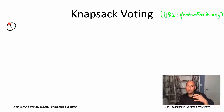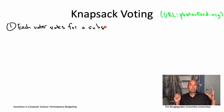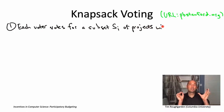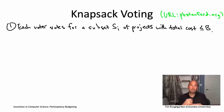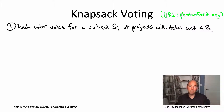In knapsack voting, you can give thumbs up on any number of projects you want, as long as the sum of those project costs is at most the budget. So in effect, a voter is proposing a way of spending the budget — a subset of projects to spend the budget on — subject to feasibility, subject to those projects really not costing more than the budget.